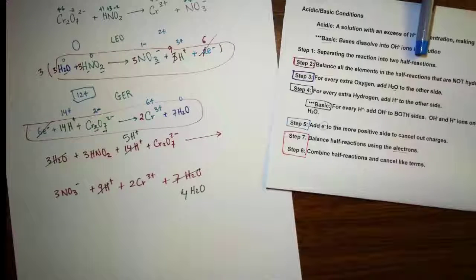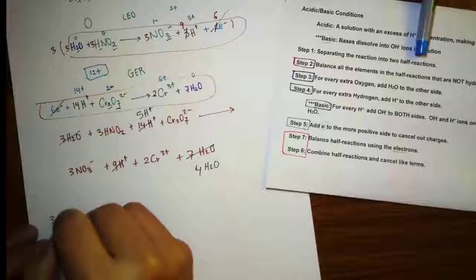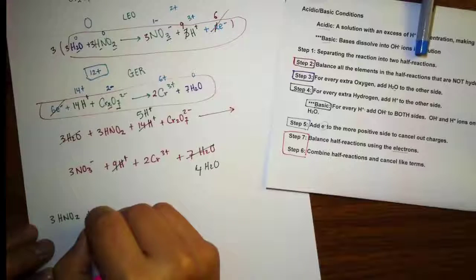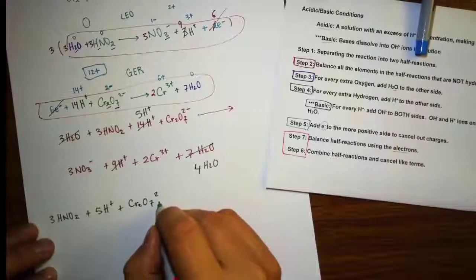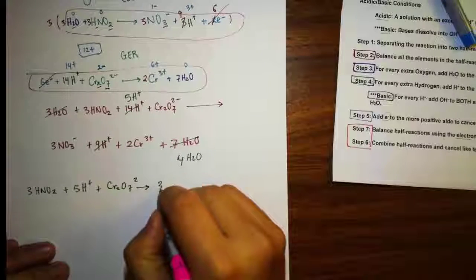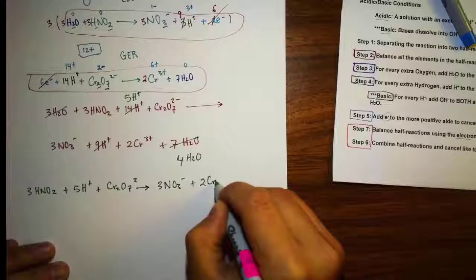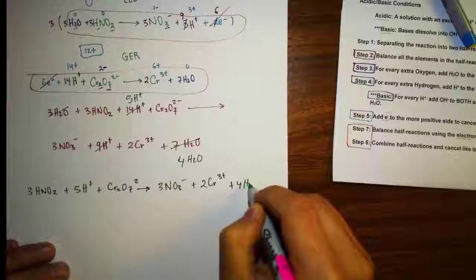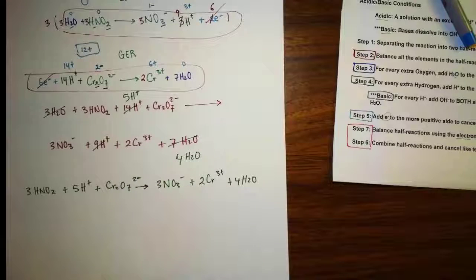So our final balanced equation is: 3 HNO₂ + 5 H⁺ + Cr₂O₇²⁻ → 3 NO₃⁻ + 2 Cr³⁺ + 4 H₂O. And that is our answer. As you can see, this process is pretty straightforward, but you need to be patient with the process to solve the problem.